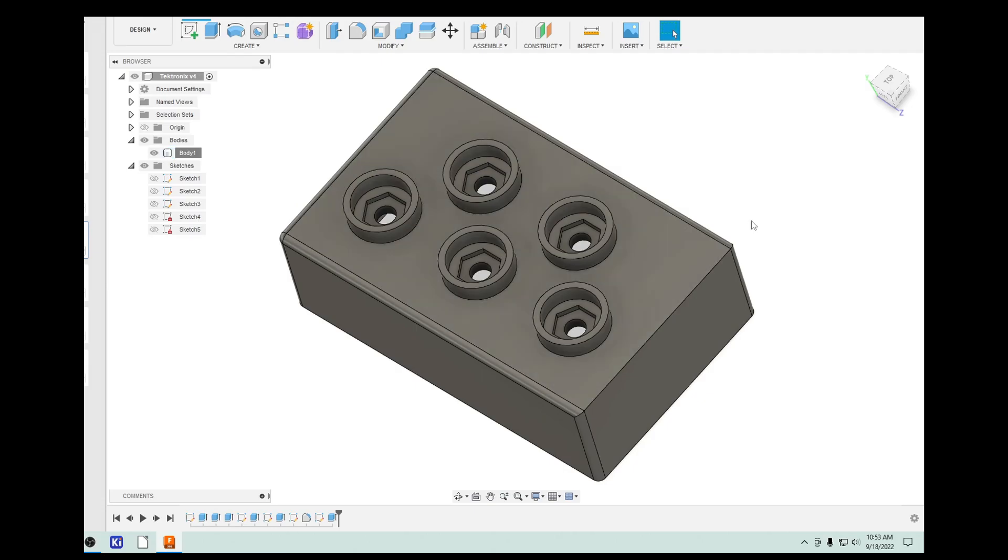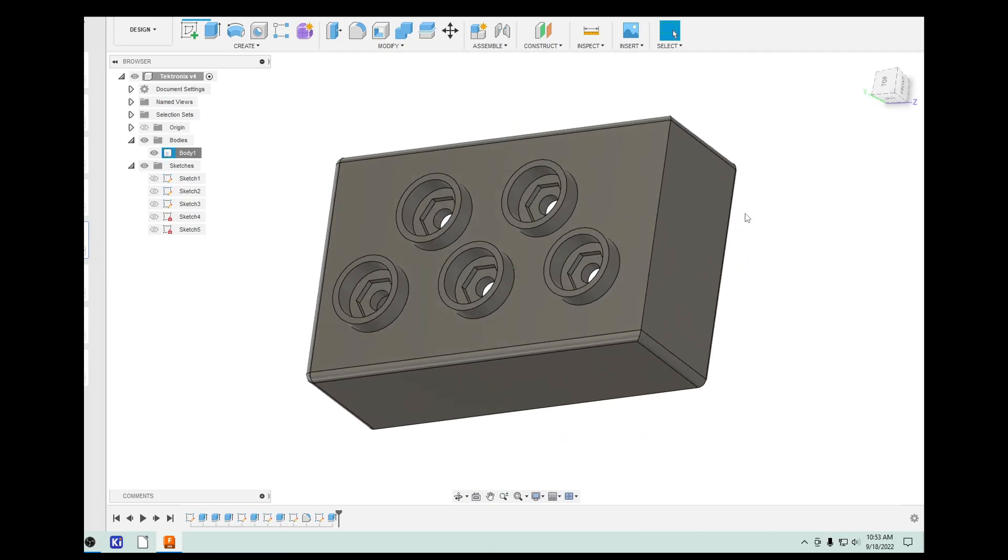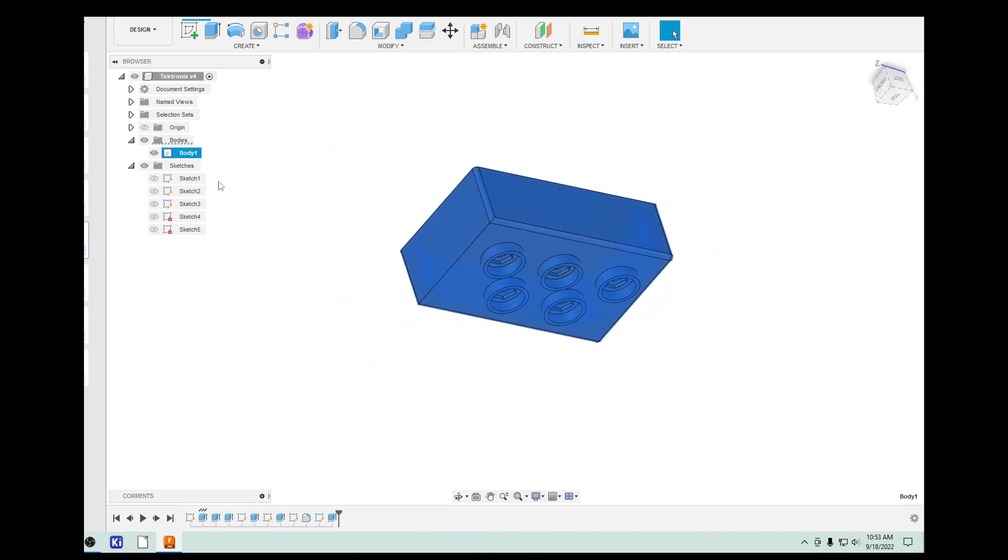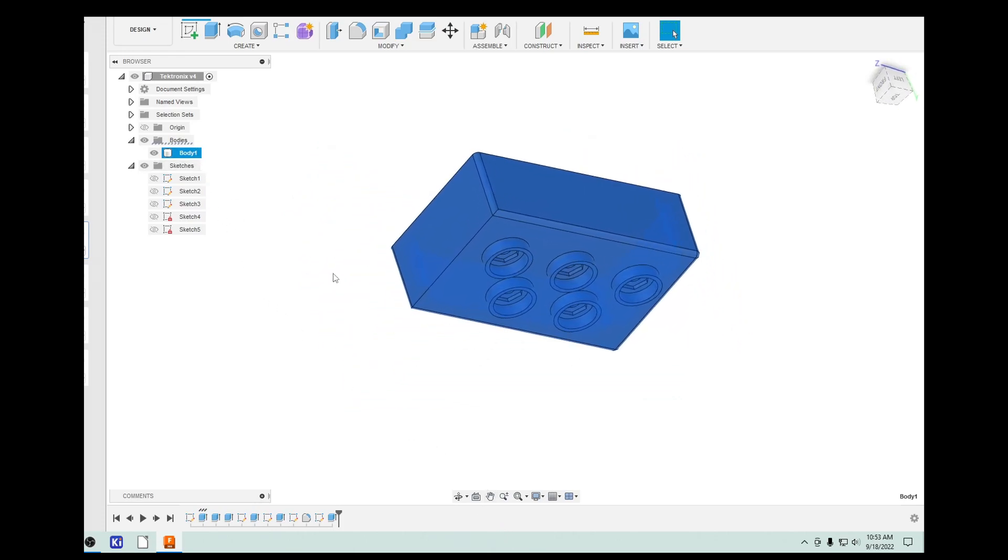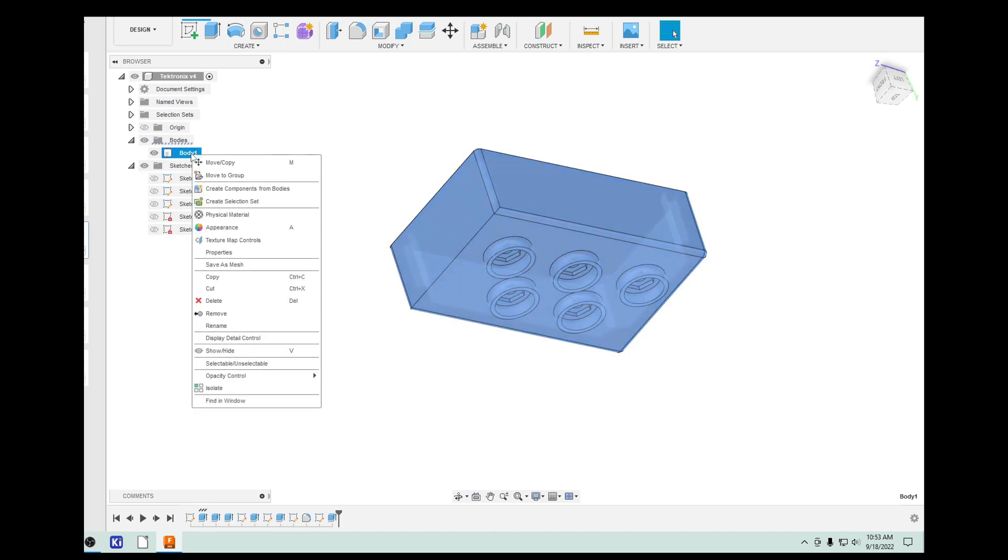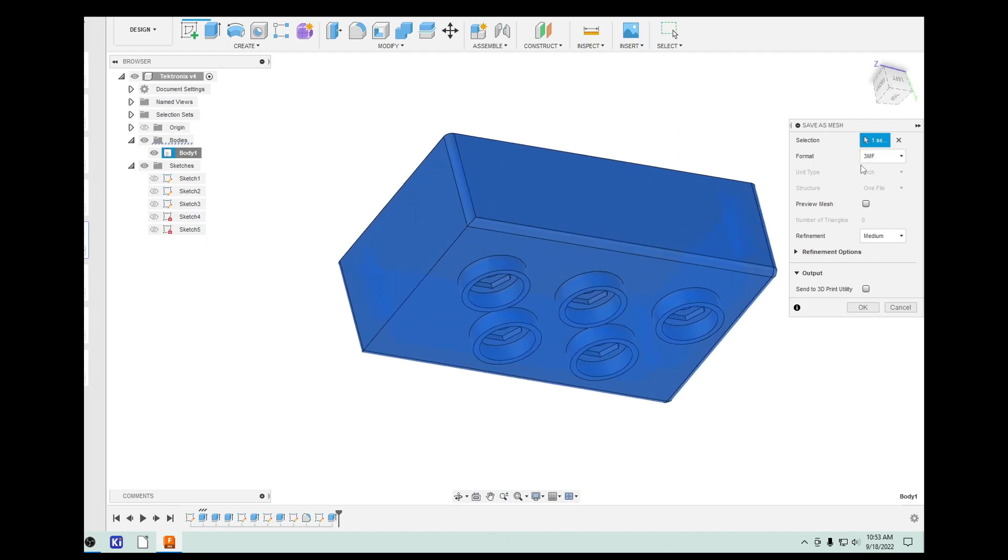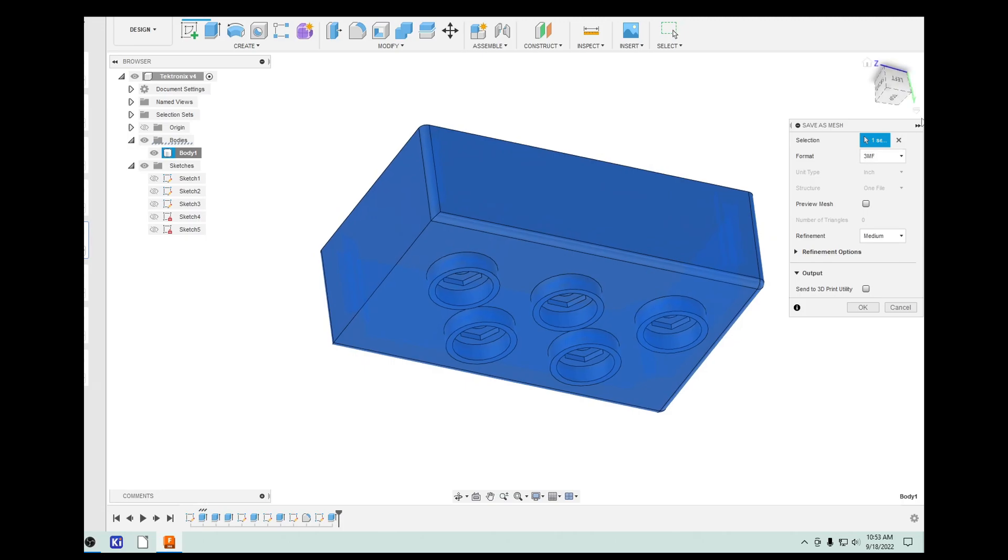And yeah, there you go. So this is designed in Fusion 360. Once you get this operating and drawing the way you want it, you go to the body. You might have multiple bodies in your design. And then you do a right click and you say save as mesh, and it'll save it as a 3MF mesh file. And then your slicer for your 3D printer can use it.